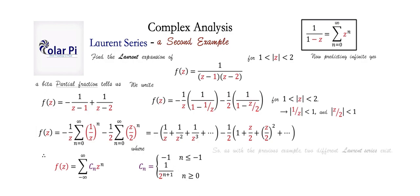Okay, cool. All right, so you see, as with the previous example, two different Laurent series exist, one for inside the annulus and one for outside the annulus.